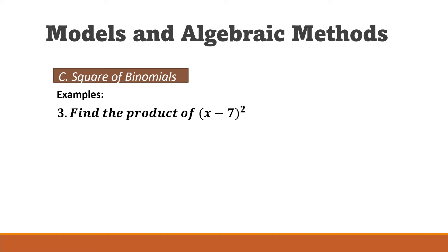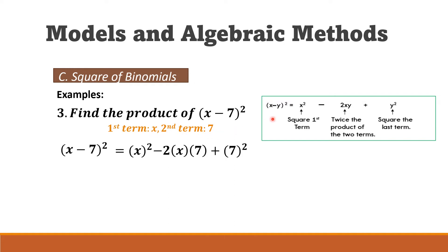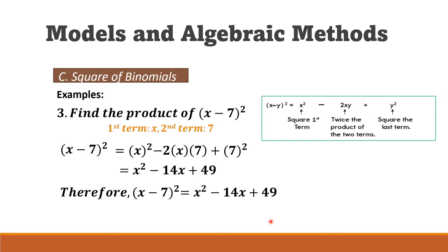Example three: find the product of (x − 7)². Since it is subtraction, the sign of the second term will be negative. The first term is x and the second term is 7. We get x² minus 2 times x times 7, plus 7². So x² − 14x + 49.